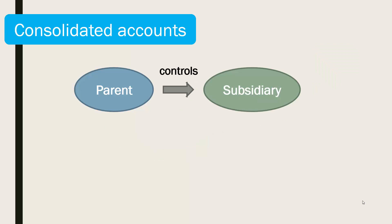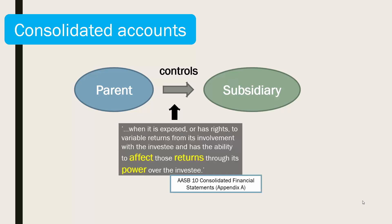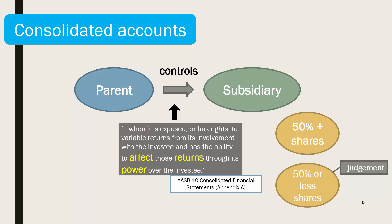For those situations where the investor company parent controls the investee company subsidiary — when it is exposed or has rights to variable returns from its involvement with the investee and has the ability to affect those returns through its power over the investee — this is the case when a parent has more than 50% of the shares in an investee company. If a firm has 50% or less of the shares in an investee company, it is a matter of judgement whether the firm controls the investee company.